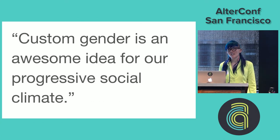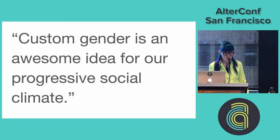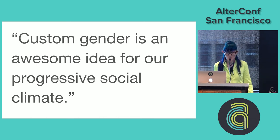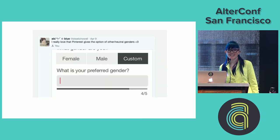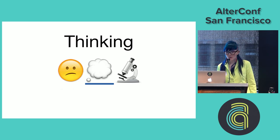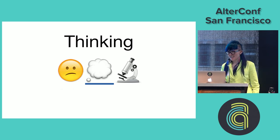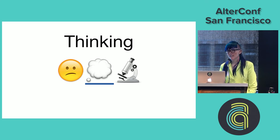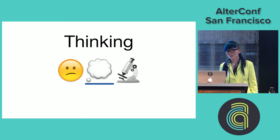Quantitative metrics never tell the whole story, so we did user research around this as well. Sentiment was positive about expanded gender options — people said things like, 'custom gender is an awesome idea for our progressive social platform.' We got love on social media too. But the whole project got me thinking: why is this so important to me? I thought I was building this feature as ally work, but I realized there was something deeper going on.